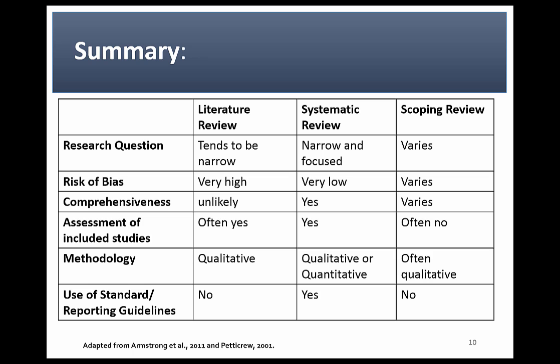Let's now summarise the differences between the three types of literature review we have considered today. Regarding the research question, it is most narrow and focused for systematic reviews, and is often narrow for narrative reviews. In scoping reviews, the research question can be either narrow or broad, depending on the context.